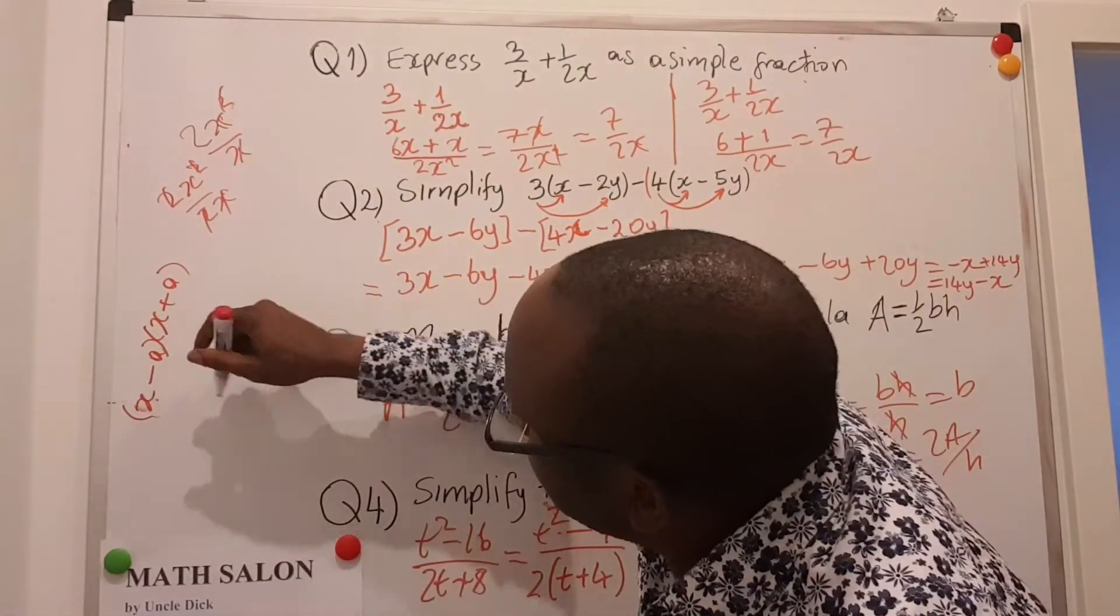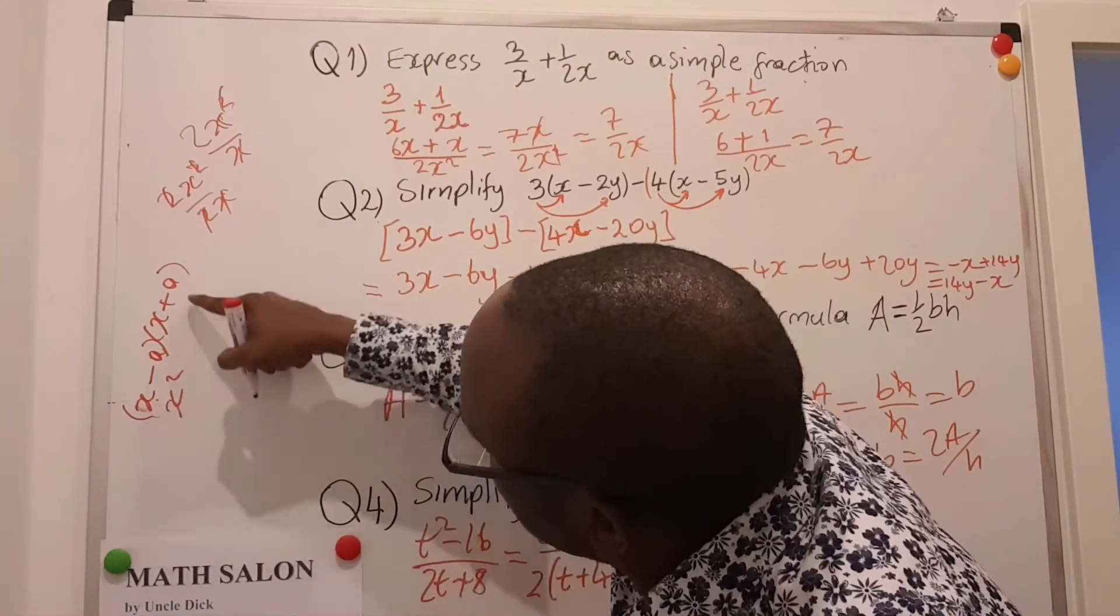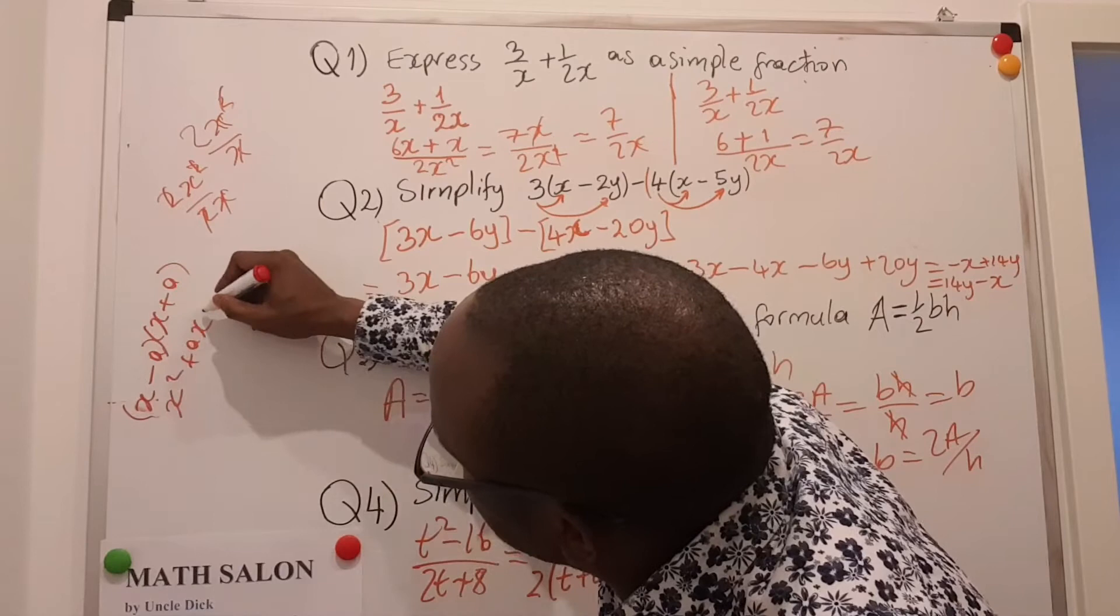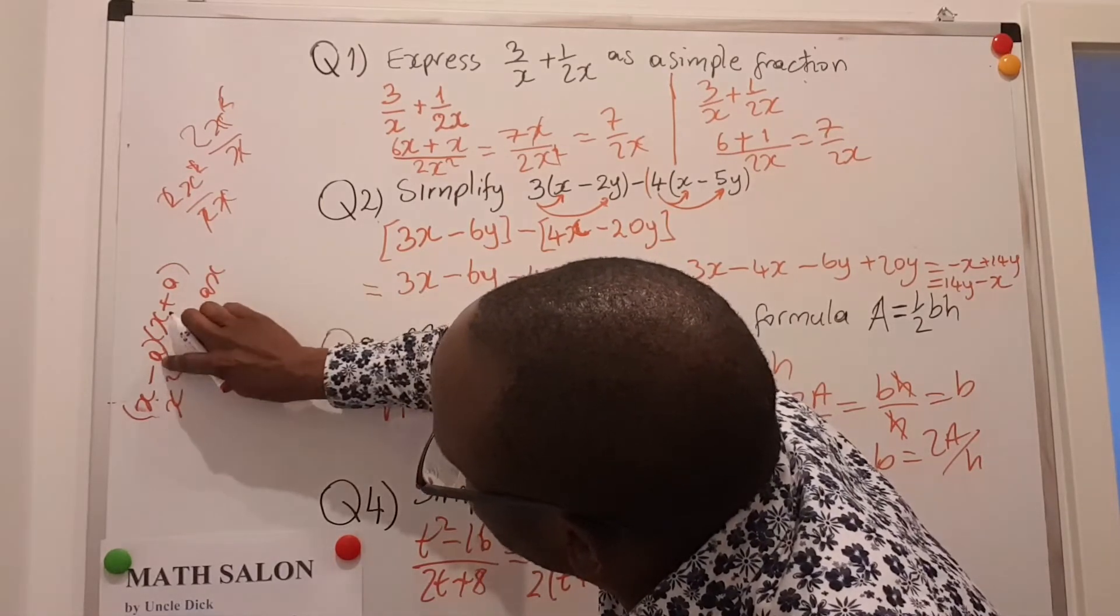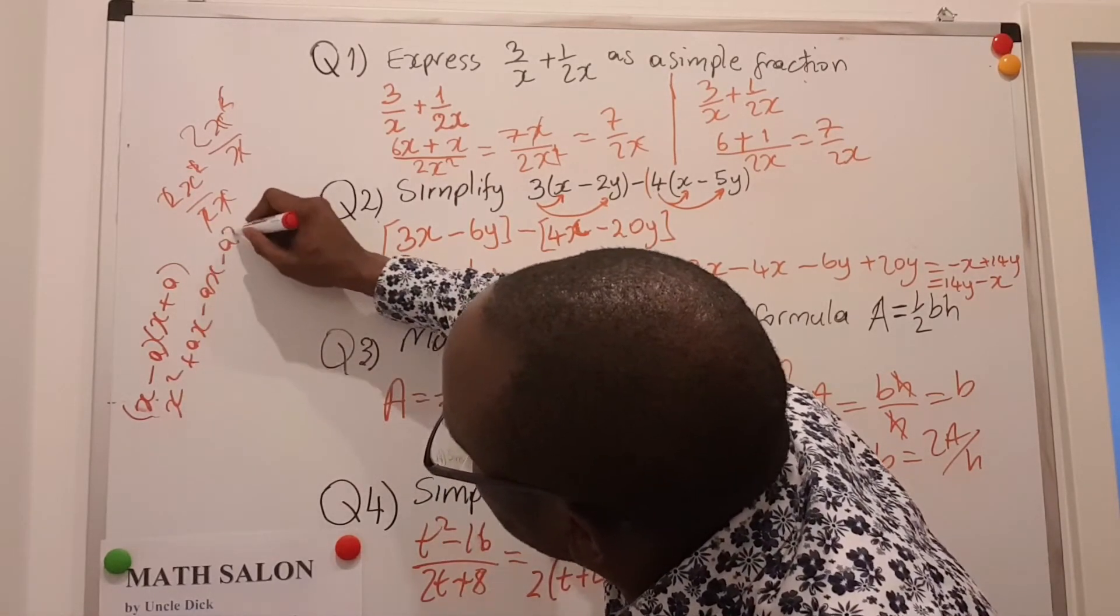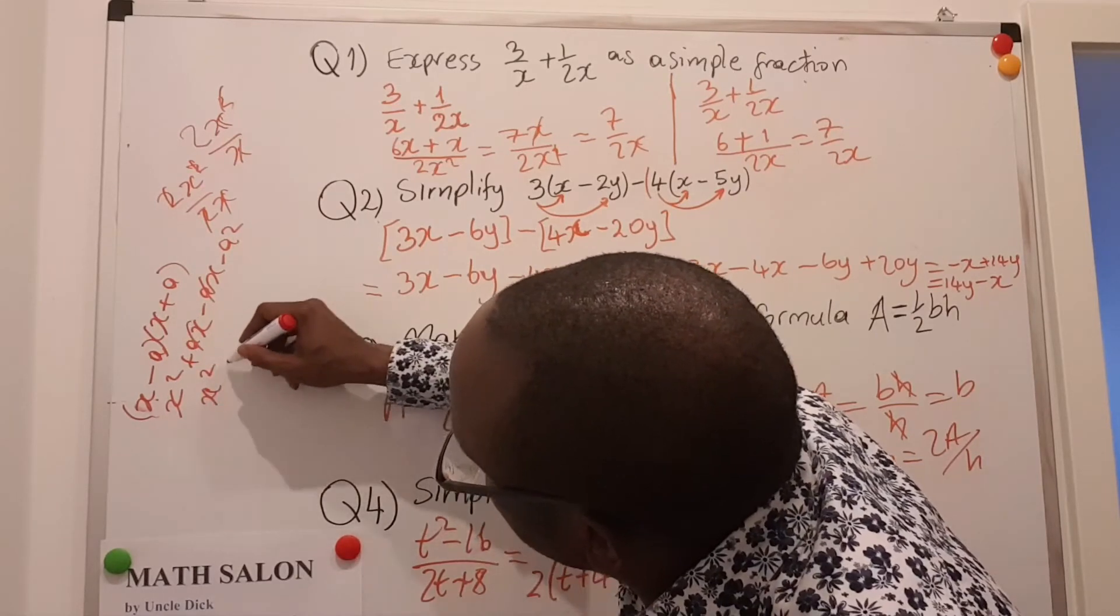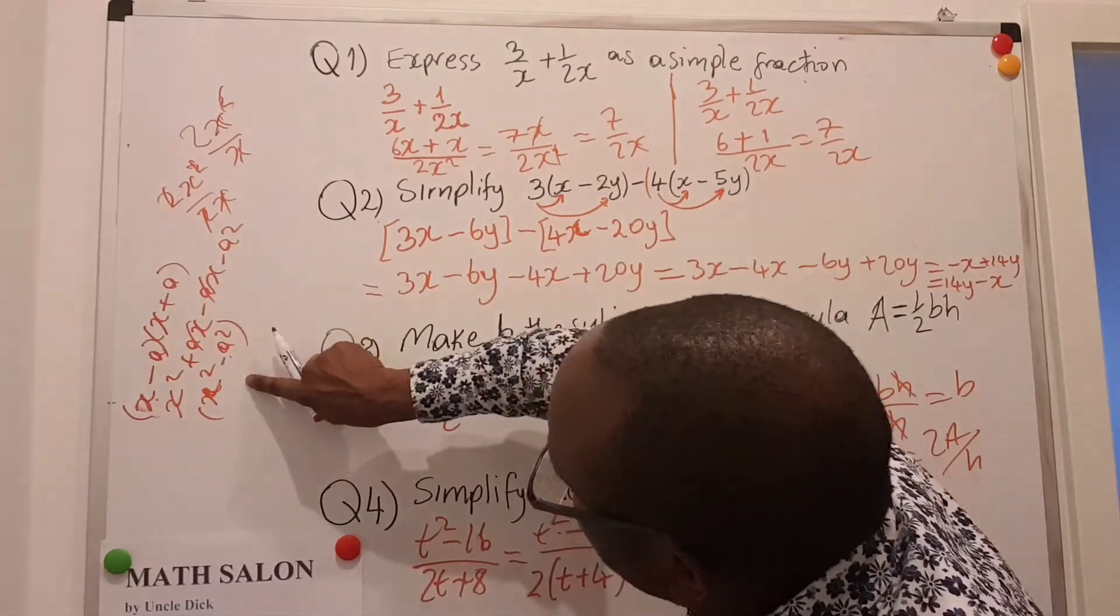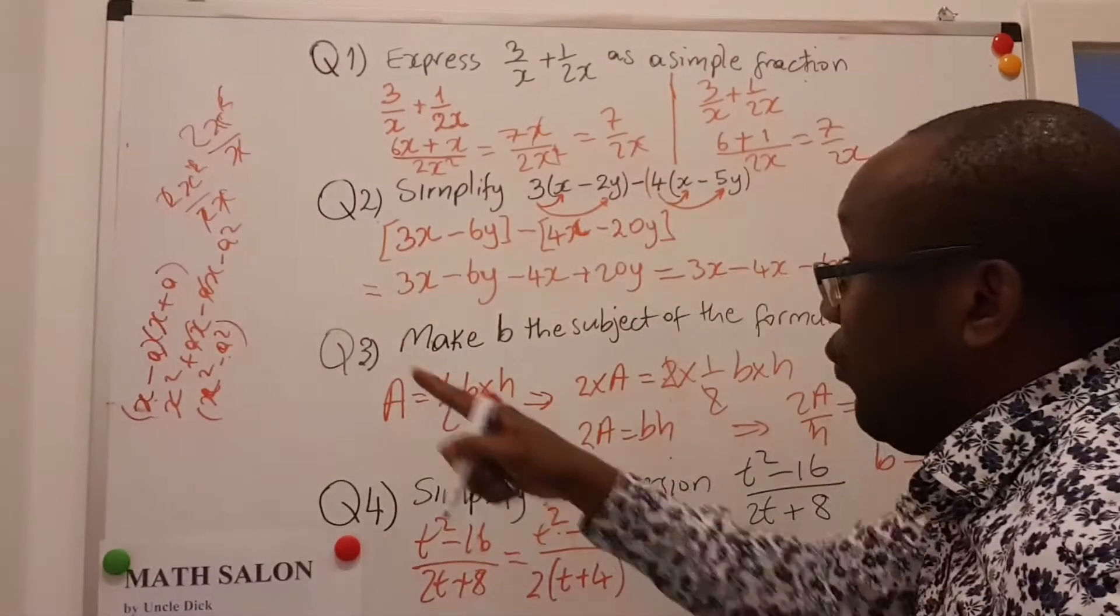If we open this out, X times X is X squared, X times A is plus AX, minus A times X is minus AX, minus A times A is minus A squared. You see, the middle disappears and we have X squared minus A squared. So it means we can move from here backwards. If we do that,